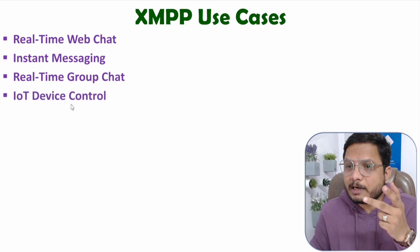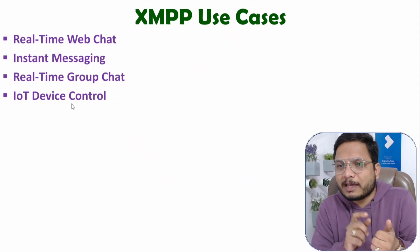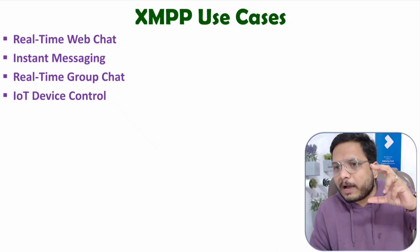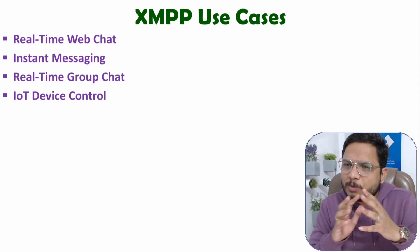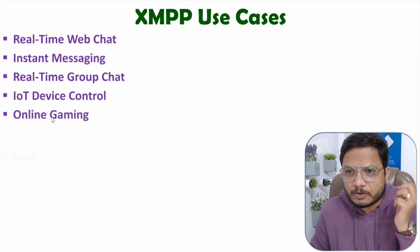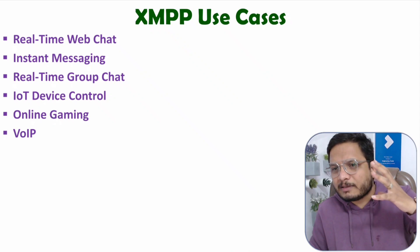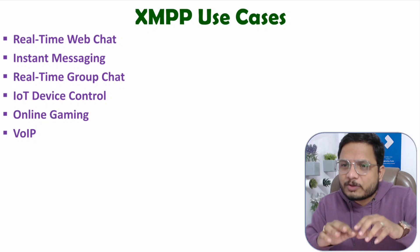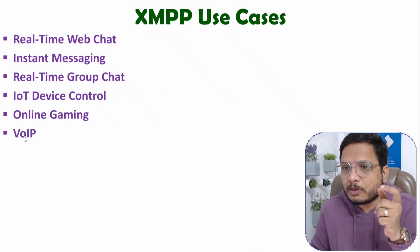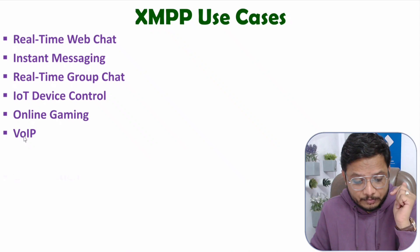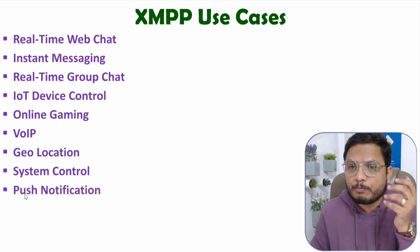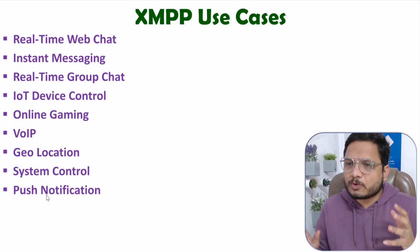IoT device control is also a use case — for example, if you want to turn on an AC, you send a message through user control to the server, and an IoT system can act on it. Online gaming is another use case, as people chat during online games using XMPP. Additional use cases include Voice over IP calls, geolocation, system control, and push notifications.